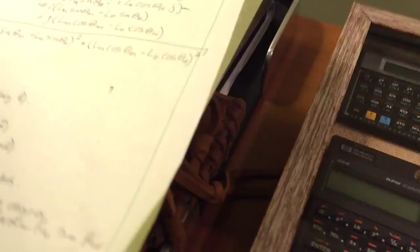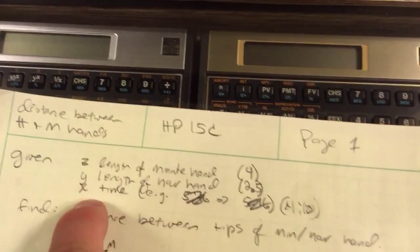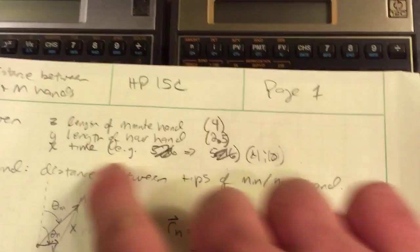I'm not going to go through all the math, but I'll show you the bottom line here. Distance between hour and minute hands given z, y and x, the stack in the calculator, length to the minute hand first, length to the hour hand, and the time. We'll just do decimal format.